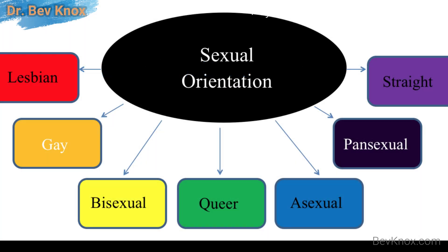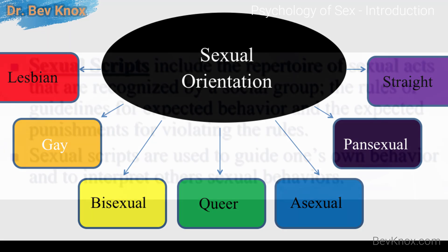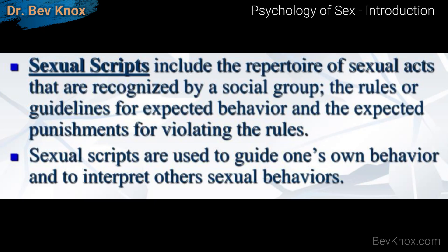Sexual orientation refers to a person's enduring pattern of attraction to others — for example, heterosexuality, homosexuality, or bisexuality. We will cover an array of sexual orientations. Gender identity refers to a person's internal sense of being male, female, both, or neither. Sexual scripts are learned social norms and expectations about how to behave in sexual situations.